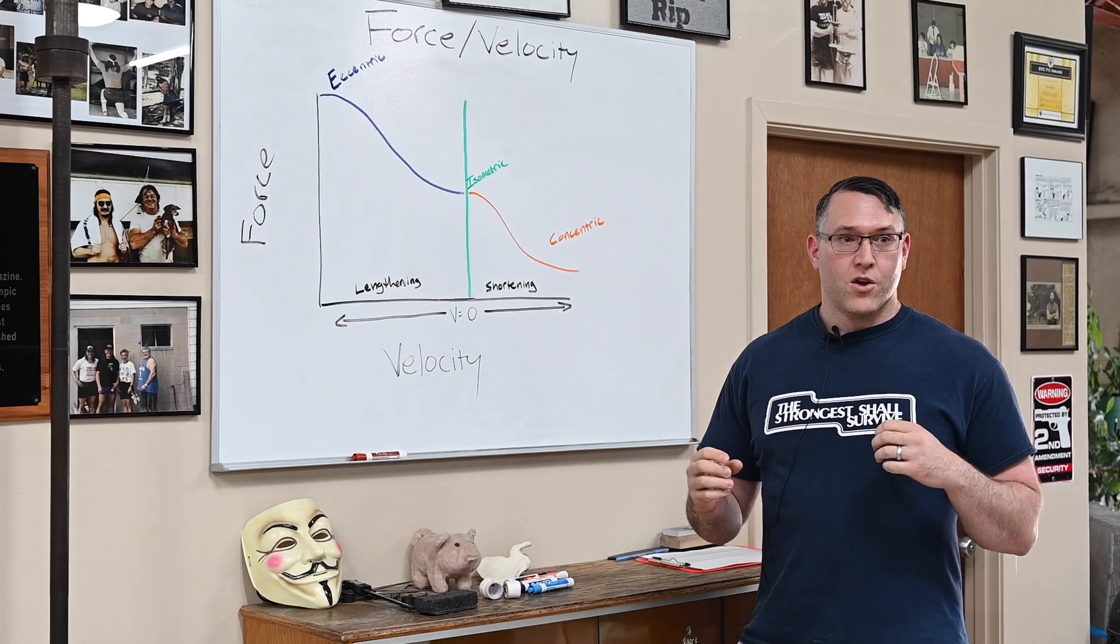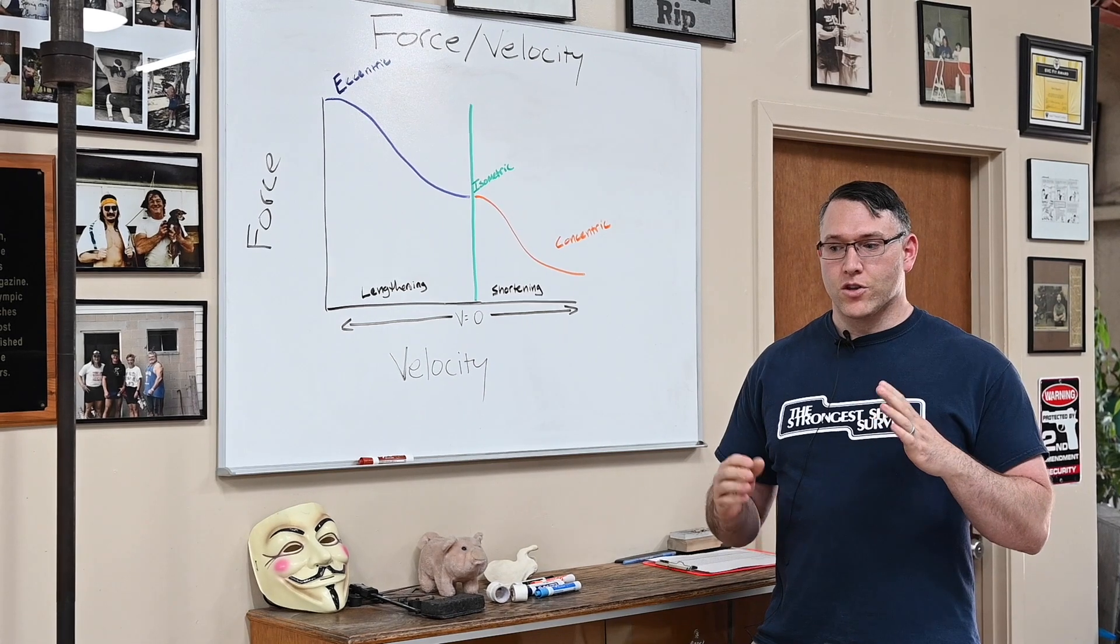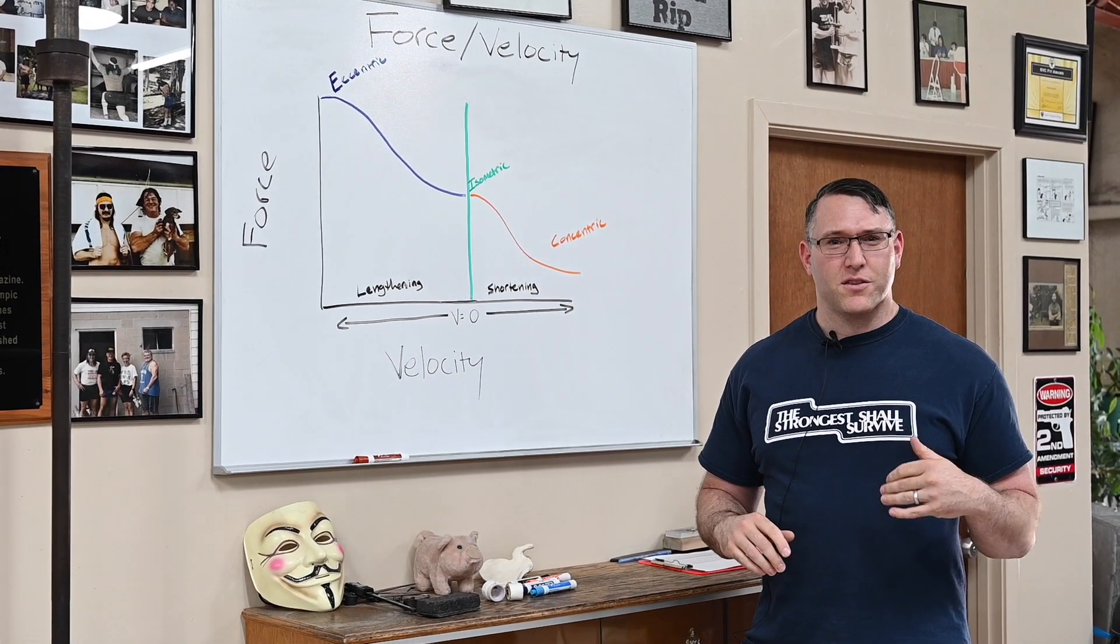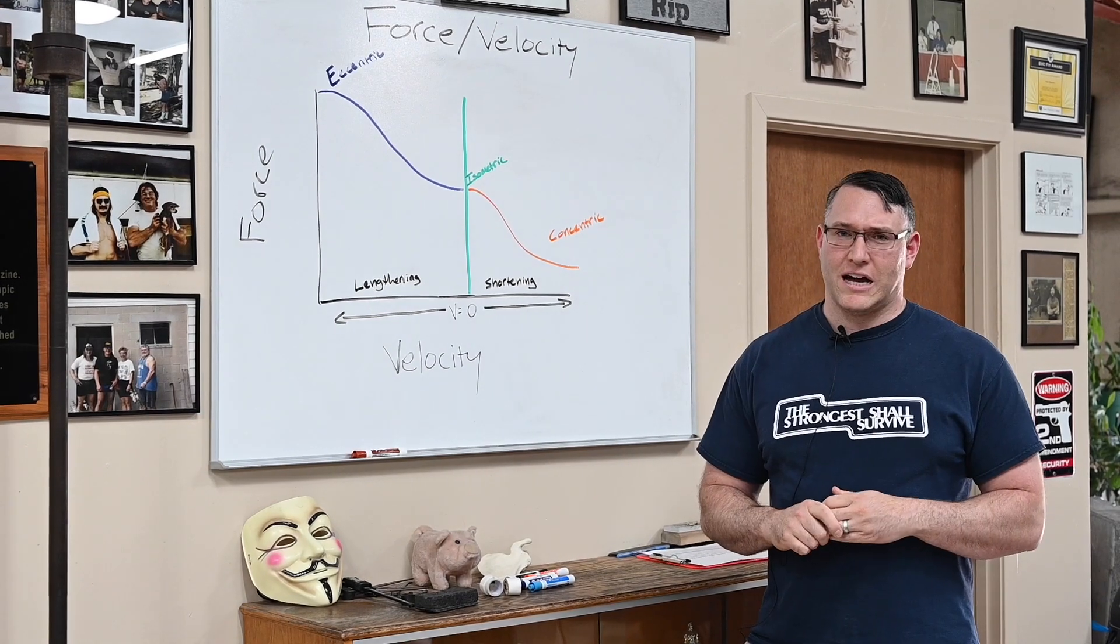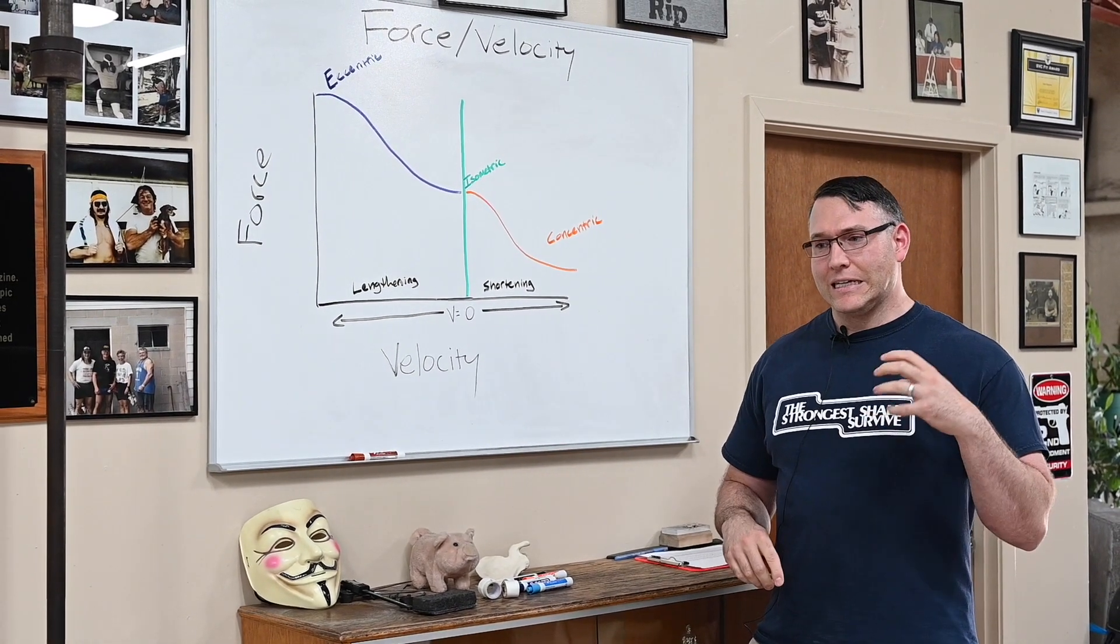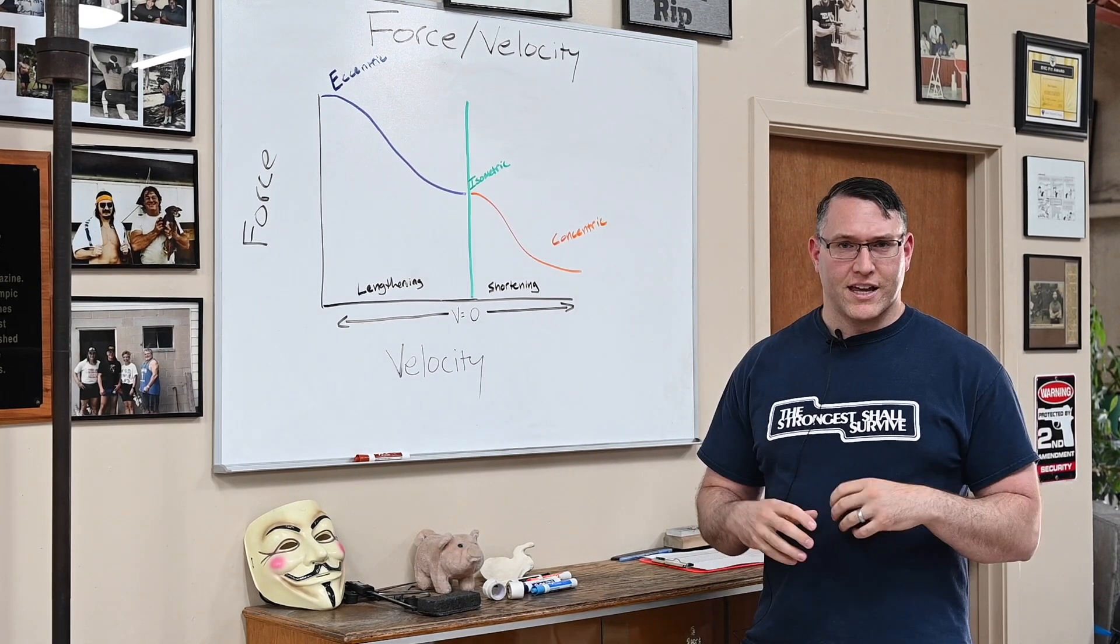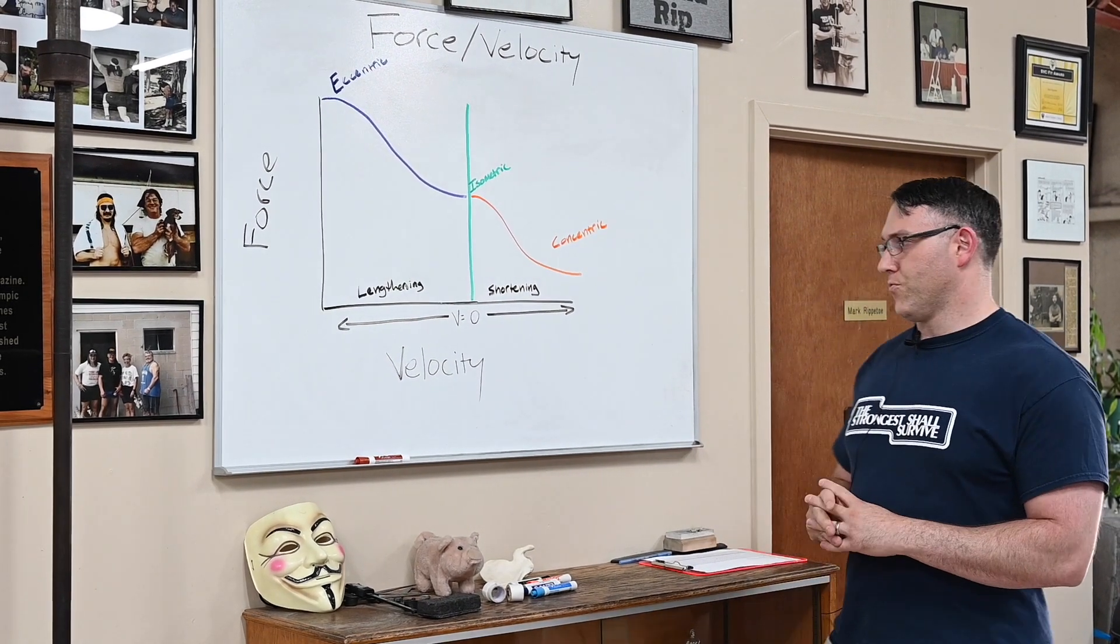With a shear force, we have two opposing forces. Instead of being parallel with the body, they're working perpendicular to the body. We need the skeletal structures, the muscles, tendons, and ligaments all to work together to handle those types of forces.